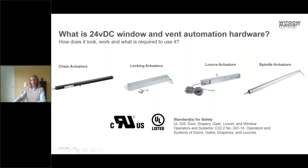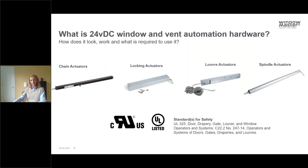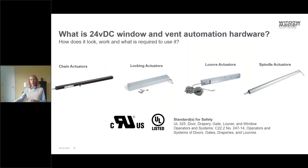We also have louver actuators and spindle actuators. Spindle actuators are strong but do protrude into the space — great for very heavy windows, especially skylights where there's snow or ice load. Most chain actuators are UL 325 certified. Some locking actuators and spindle actuators are not, but we'll guide you through that for your specific project. Most of the time in North America we use chain actuators because they are UL certified.